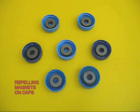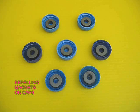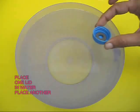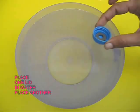So here are these seven lids with seven magnets all in a repelling mode. This is the bottom of the lid. Now take a large jar of water and place one lid. As soon as you place the second lid they repel each other.